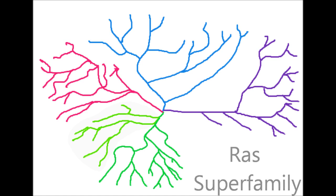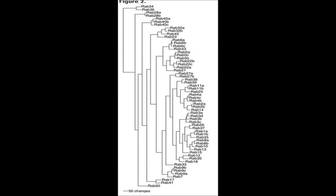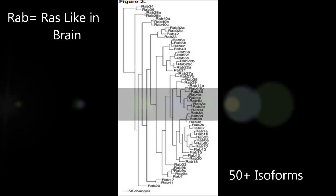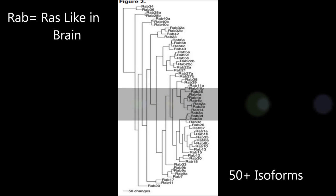has five principal classes: RAS, Rho, RAB, RAF, and ARF. RAS-like in brain, or RAB, has approximately 50 different isoforms, and each of these regulate different vesicular pathways.